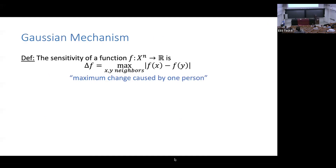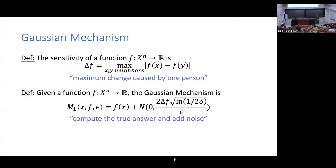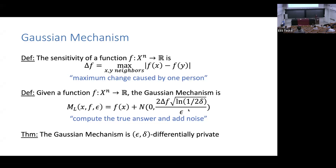You might ask: why use Laplace noise when everyone uses Gaussian noise? You don't have to. You can also use Gaussian noise — compute sensitivity the same way, then add Gaussian noise with mean zero and variance scaling with Δf over epsilon. There are some log terms in delta because a Gaussian tail isn't exactly exponential, so we account for that with an additional delta term. The Gaussian mechanism satisfies epsilon-delta differential privacy.